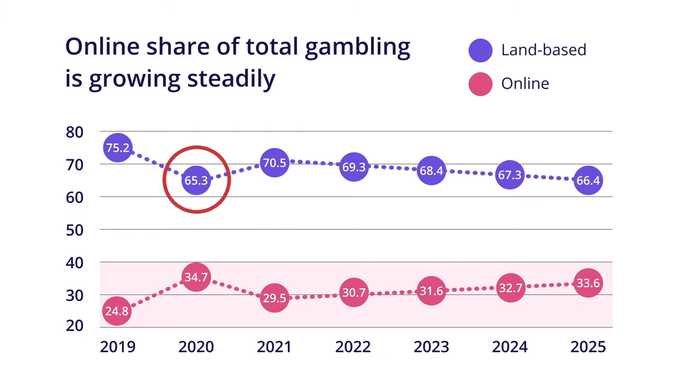Every day we meet new potential customers who ask for online casino software for sale at a dozen companies. Why does it happen more and more often? According to H2 Gambling Capital, the market share of iGaming is increasing firmly and is expected to reach 33.6% of Europe's gross gaming revenue by 2025. In 2020, iGaming was expected to momentarily increase to 34.7% of total gaming revenue due to the COVID-related closures of brick-and-mortar casinos.